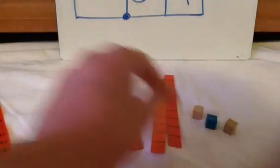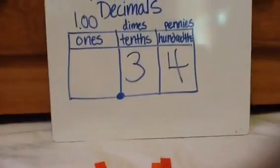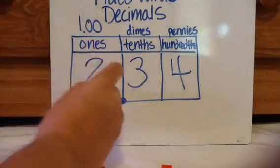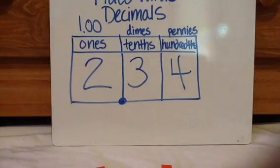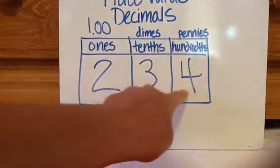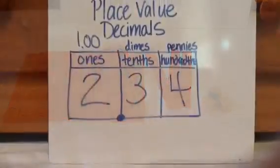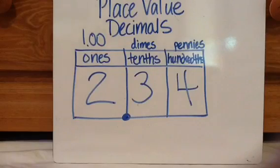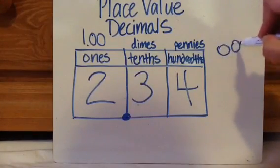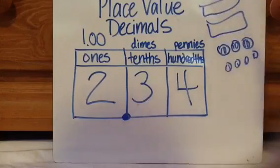Now we can add to it by saying two ones blocks, so you would use these for that. This is how you would read it — anytime you see a decimal, you say 'and,' so 2 and 34 hundredths. Wherever it stops, you say that place value word, so it would be 2 and 34 hundredths. In this situation, since I don't have any coins, you would have 3 dimes, the 10-cent dimes, and then 4 pennies, and then two $1 bills to represent that.